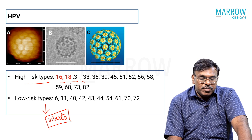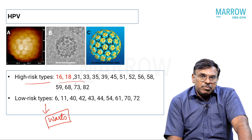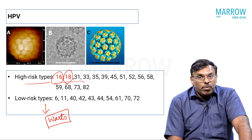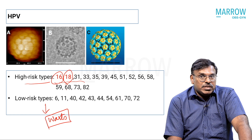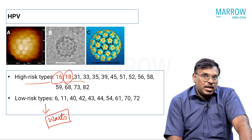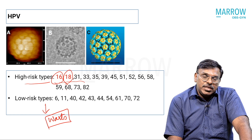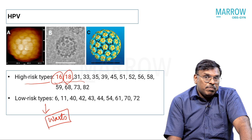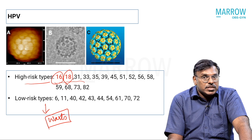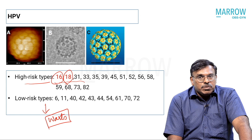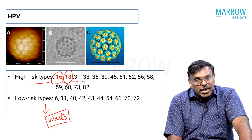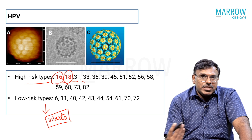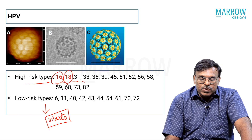The high-risk types you should be aware of — the easier ones to remember are HPV 16 and HPV 18. HPV 16 is the most common high-risk type found in abnormal lesions. HPV 18 has more specificity towards the development of adenocarcinoma. The most common histology in cervical cancer is squamous cell carcinoma, which is associated with HPV 16. Both HPV 16 and 18 contribute to both squamous cell carcinomas and adenocarcinomas, but HPV 18 has more predilection for adenocarcinoma.